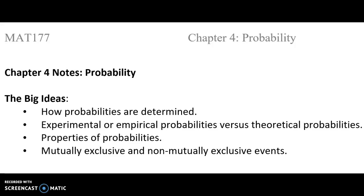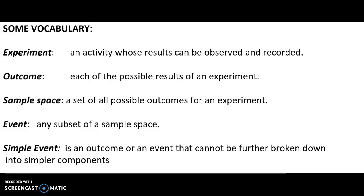Hello. In this video we're going to talk about basic probability. Please use your chapter 4 probability guided notes to follow along. The big ideas for this section are to be able to find out how probabilities are determined, experimental or empirical probabilities versus theoretical probabilities, the properties of probabilities, and then we're going to look at mutually exclusive and non-mutually exclusive events. As usual, we'll start with some vocabulary so that we're all speaking the same language.